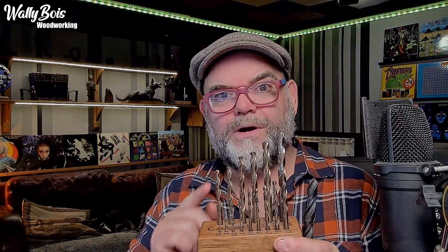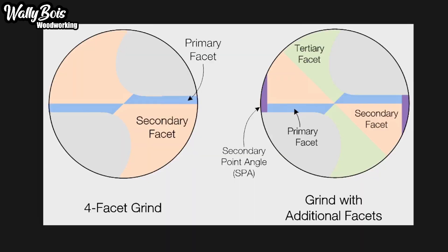But before we do, what do I mean by multi-faceted drill bit? We have different cutting faces of a drill bit, as if you're looking at the drill bit from the top. A four-facet grind, which is a bit more of a standard grind drill bit, has a secondary facet and a primary facet. The primary facet is the cutting facet; the secondary facet is the clearance facet. But with a multi-faceted drill bit, you can also have a secondary point angle — a bit rarer — and also a tertiary facet. It makes sharpening a little bit more complicated, but don't fret, it doesn't really matter, and I'll explain why.